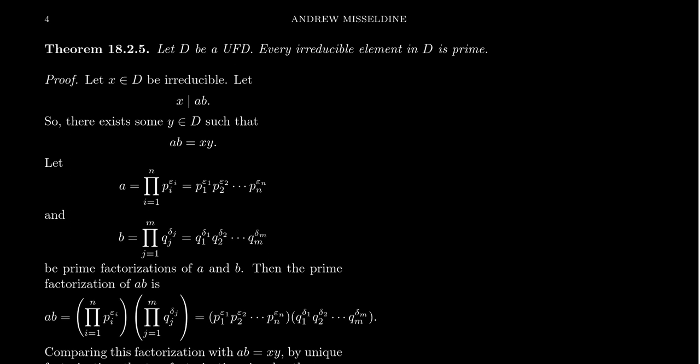So that's why in unique factorization domains, we call this unique factorization into irreducibles the prime factorization. This is why kids in primary school, when they learn about prime numbers, they define them as irreducible numbers, but they call them prime numbers. Well, that's because the ring of integers is a UFD. So primes and irreducibles are the same thing. So no harm, no foul in that setting.